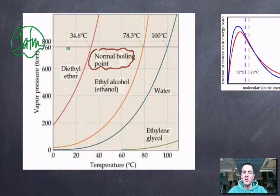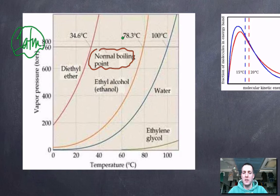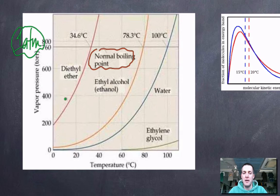We can mark atmospheric pressure on this graph and say that the temperature at which each liquid's vapor pressure reaches atmospheric pressure is its boiling point. Their boiling points are different. For every one of these liquids we get this curved shape when we plot vapor pressure against temperature — it's important to be able to sketch these graphs in your exams.